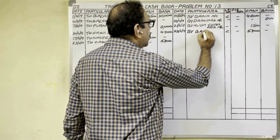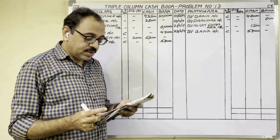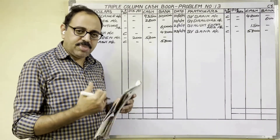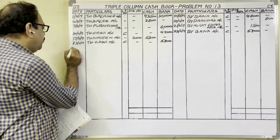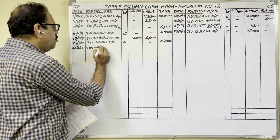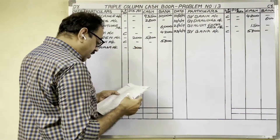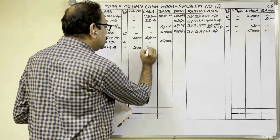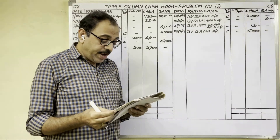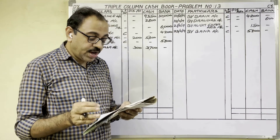25th date: Received cash from Manasa 3,708, discount allowed 300. Cash is coming in — debit side. Write 'To Manasa Account.' In the discount column write the discount allowed amount; in the cash column write 3,708 rupees as cash received.